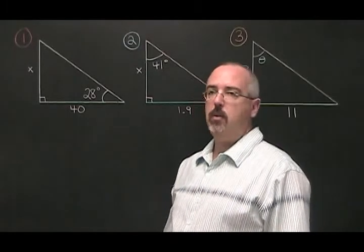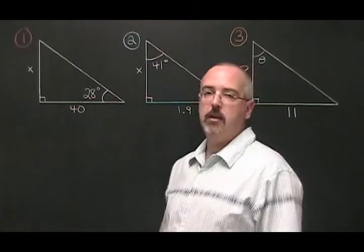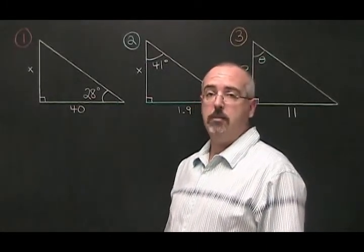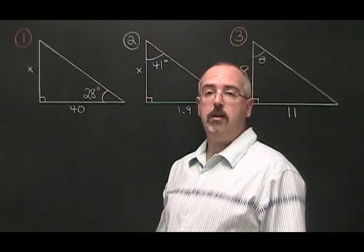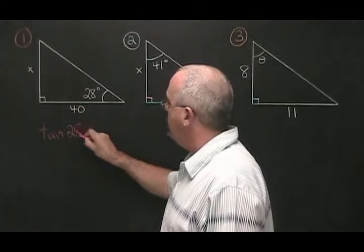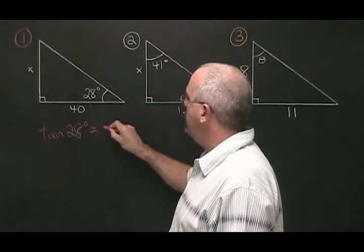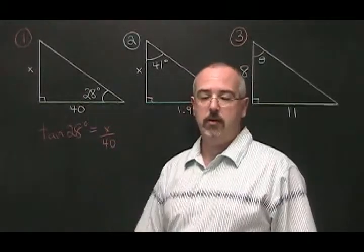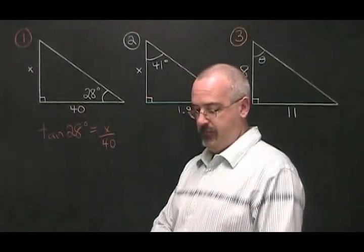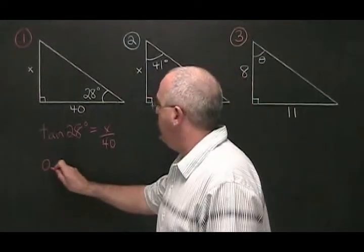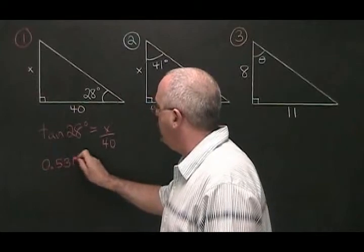In example 1, we have a 28 degree angle with an adjacent side that is equal to 40, and we want to know the length of the opposite side. We fill in our TOA formula: TAN of 28 degrees equals opposite over adjacent. The TAN of 28 degrees equals 0.5317, so we replace it in the formula.